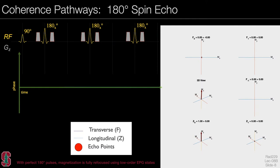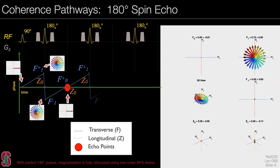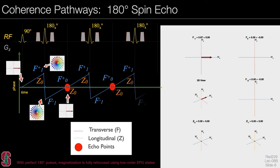Let's look at this sequence. On the right is the EPG decomposition of the signals, and on the bottom we build up the coherence pathway diagram as the sequence plays. We start with magnetization at equilibrium, excite with a 90-degree pulse, and see the states forming and the spin echo formation. For perfect 180-degree pulses, the magnetization primarily goes between F0, F+1, and F−1 states. The longitudinal magnetization has a small amount that gets flipped back and forth.